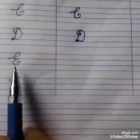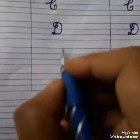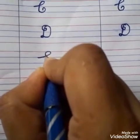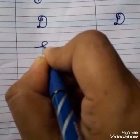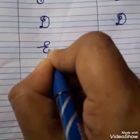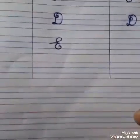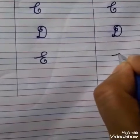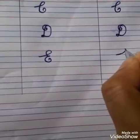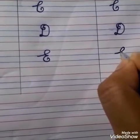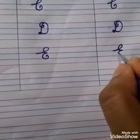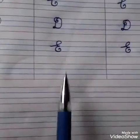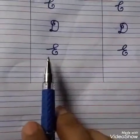Now we will write capital cursive E. First we will make a crossing line. Then a curve. Then another curve with a circle. Capital cursive E.